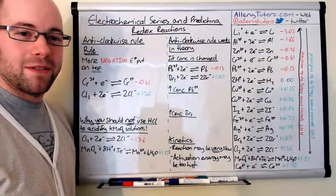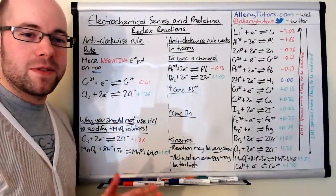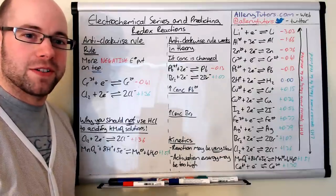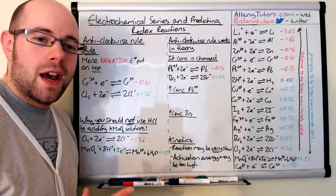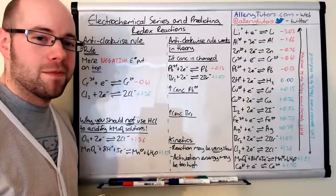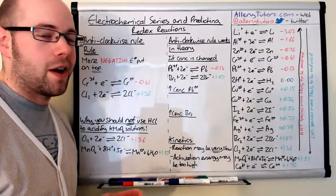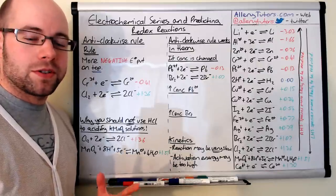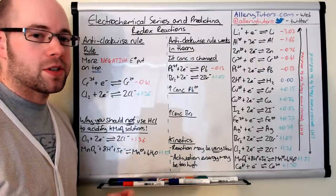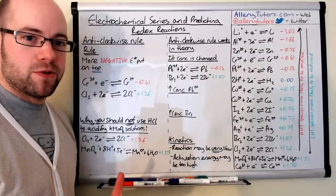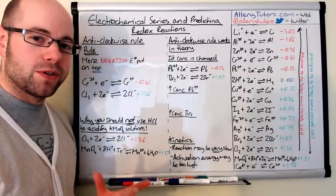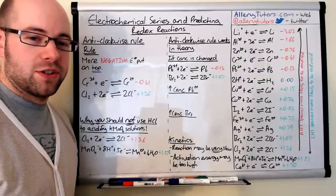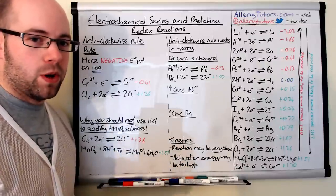Hi there, my name is Chris Harris and I'm from AlleryTutors.com. Welcome to this video on electrochemical series and predicting redox reactions. In this video we're going to look at the electrochemical series, how we can identify oxidizing and reducing agents, something called the anti-clockwise rule which allows us to predict feasible redox reactions, and some issues regarding predicting reactions that don't actually work in reality.